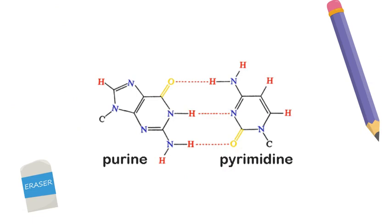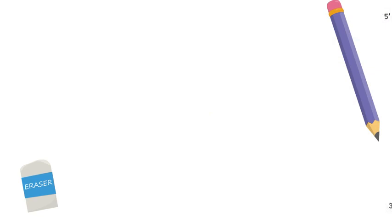Thymine and cytosine are called purine bases, as they consist of one phenol ring, while adenine and guanine are called pyrimidines, as they consist of two rings. This pairing of purines and pyrimidines ensures the two strands of DNA stay the same distance apart.